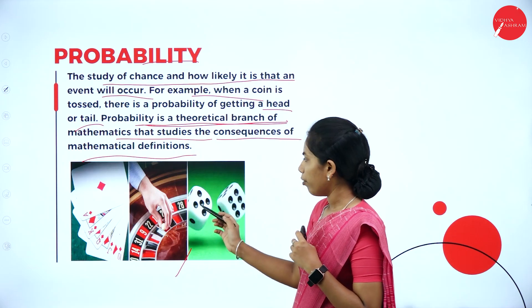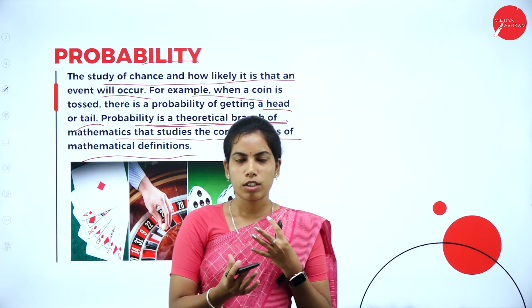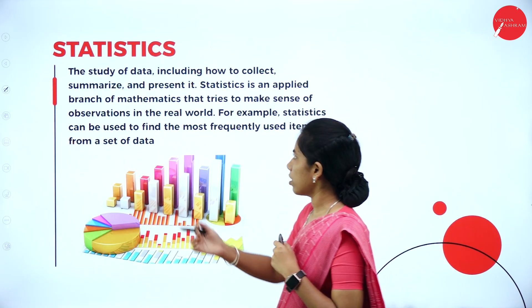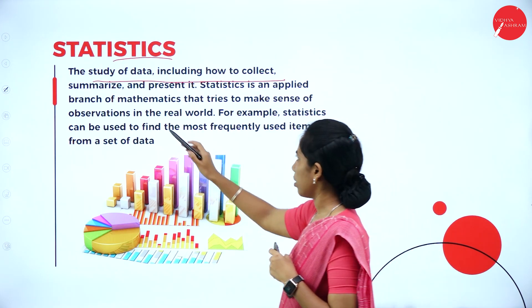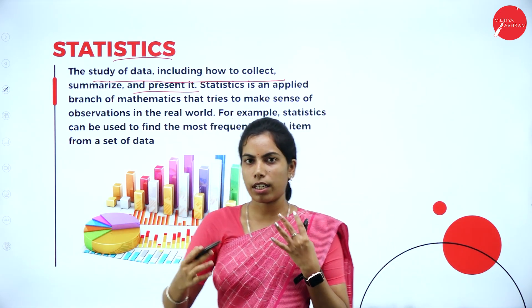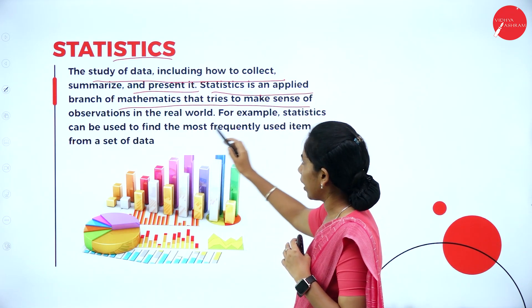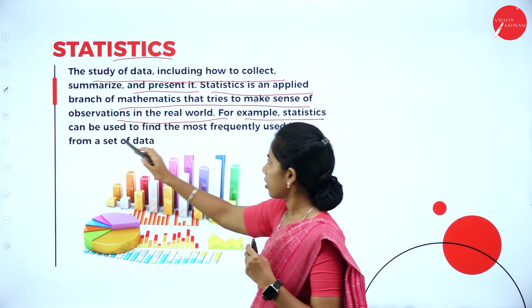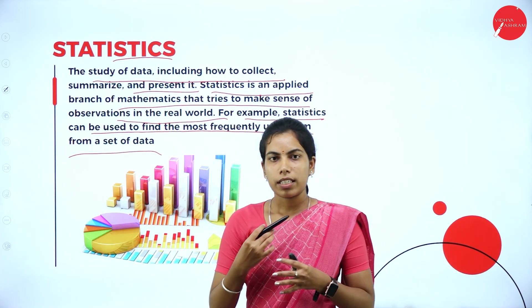Here is one more example: when I toss a dice, the probability of getting a certain outcome could be 50%, 75%, and so on. Statistics is nothing but the study of data, including how we collect, summarize, and present data. We can represent it visually using statistics functions. Statistics is an applied branch of mathematics that tries to make sense of observations in the real world. For example, statistics can be used to find the most frequently occurring item from a set.